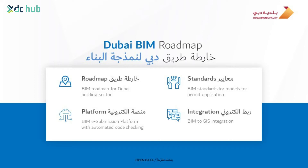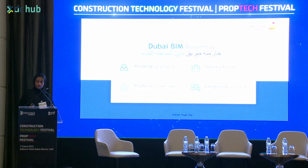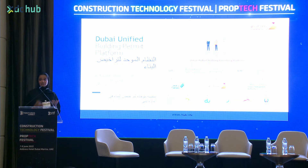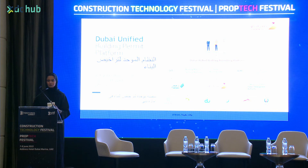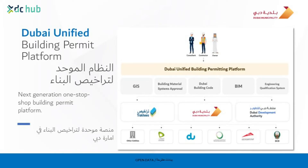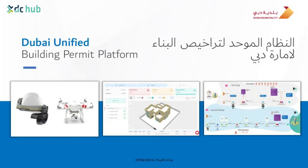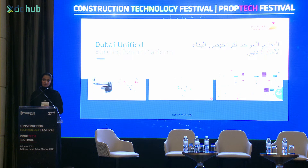Another input for our Digital Twin is Dubai BIM. We have a roadmap for Dubai BIM that started in 2020, with a clear five-year roadmap covering standards, integration, and a platform. As you can see, it covers many aspects of Dubai BIM and we are in year three now. The last input for the Digital Twin is the building permit platform — a unified platform built to feed our Digital Twin with data from the source. Whenever anyone takes a permit in Dubai to start construction, they must share with us the geospatial data required, and the platform includes a 3D model conversion platform as well as standards and the latest technology.